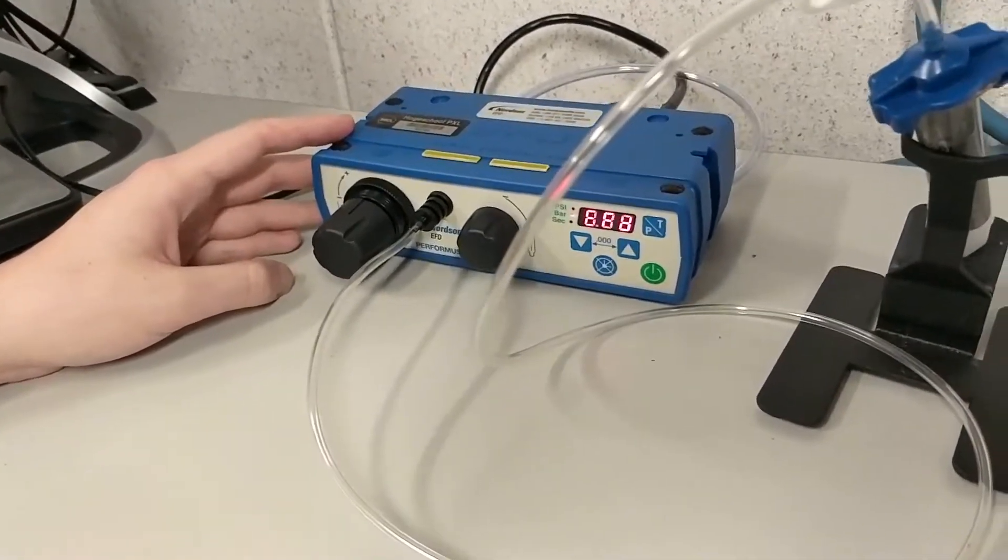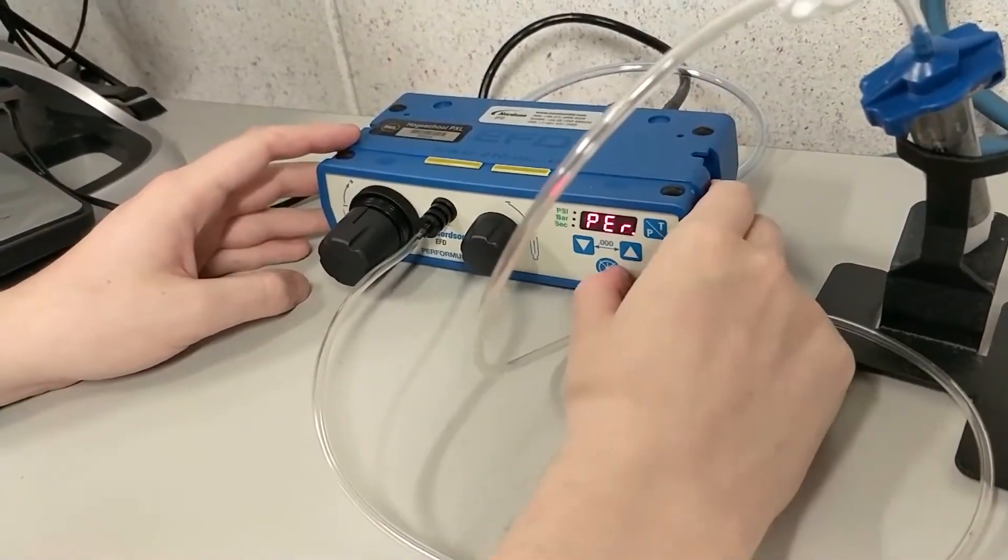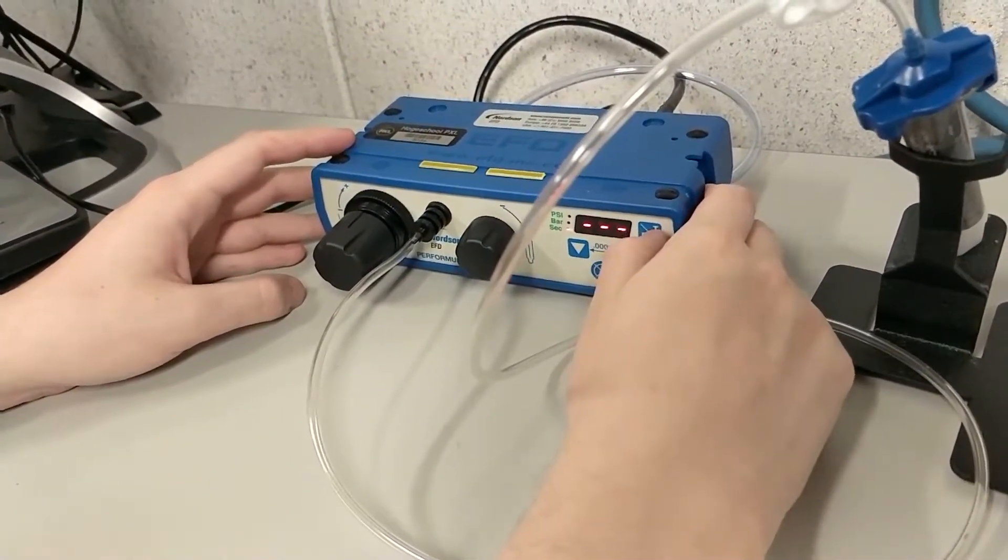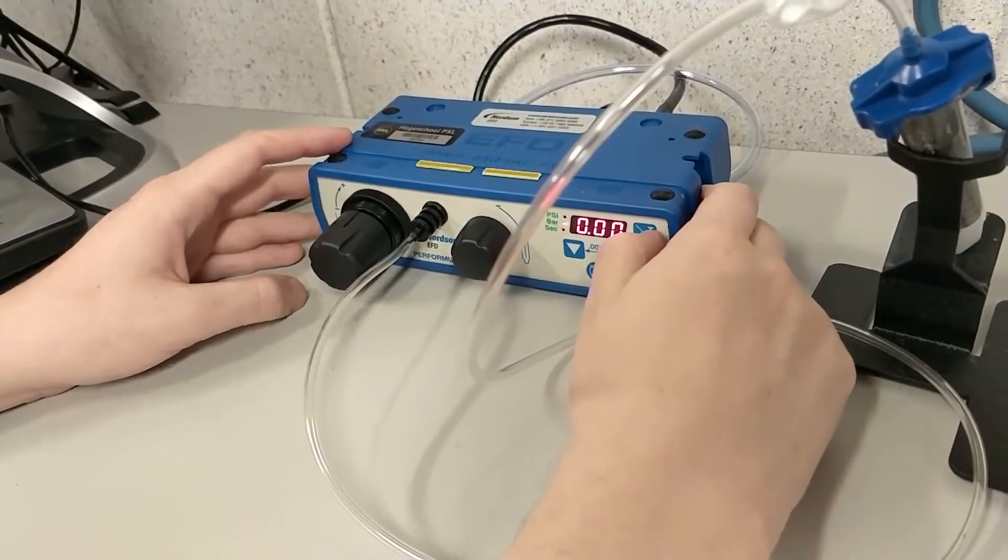Turn on the performance and use the PT button to navigate to the bar setting. Then set your desired pressure for dispensing with the leftmost knob.